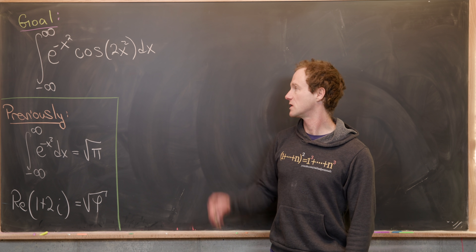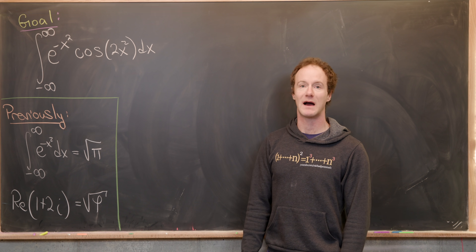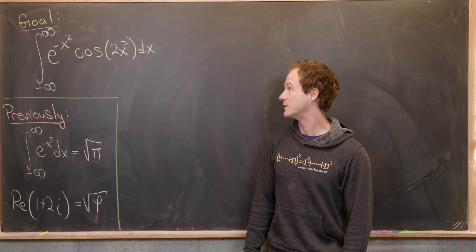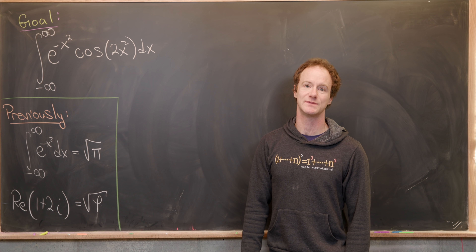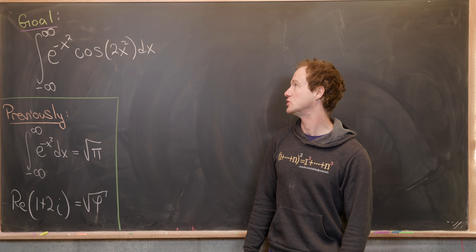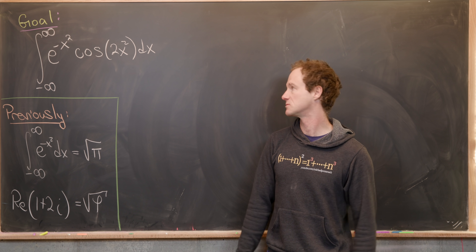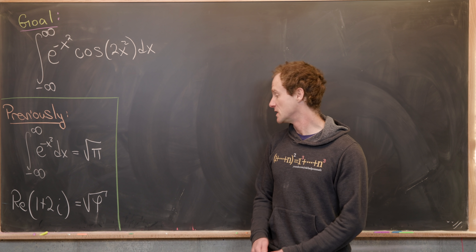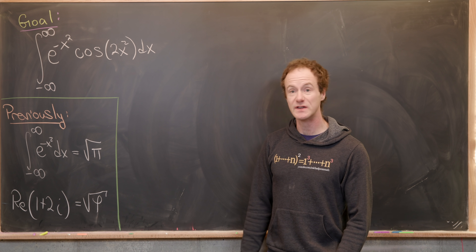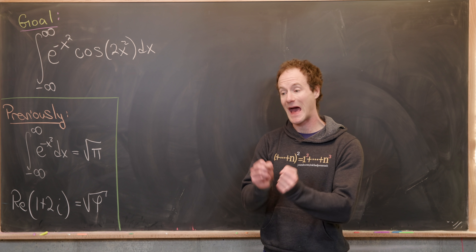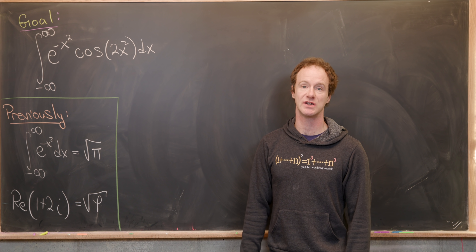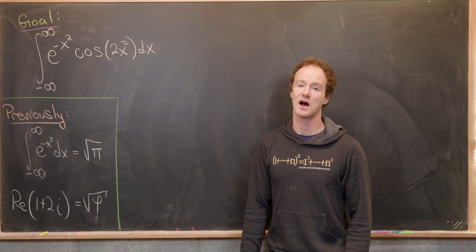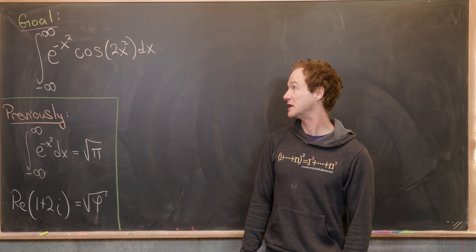So here we want to look at the integral from minus infinity to infinity of e to the minus x squared times cosine of 2x squared dx. We're going to do this by passing this cosine function into a complex exponential, and then after we do that, we have a simpler integration to do.